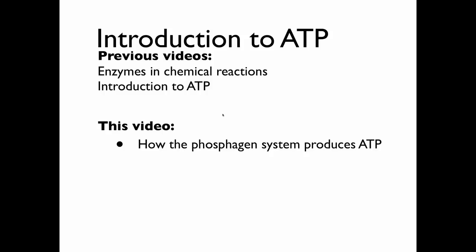Prior to this video I covered how enzymes are used in chemical reactions and I also talked about what adenosine triphosphate is. Please make sure to review those two videos before continuing with this one. In this one I'm going to talk about one of the ways ATP can be reformed, and this is through using creatine phosphate in the phosphagen system.